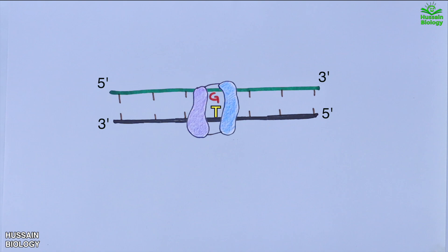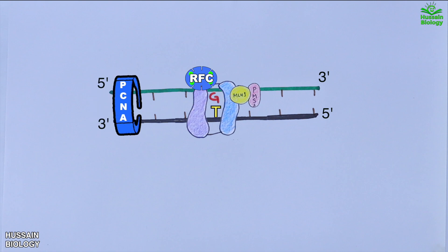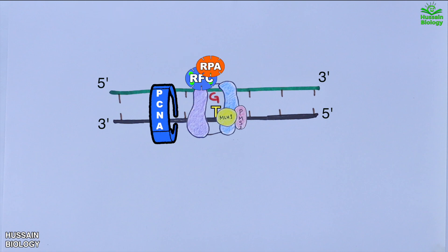Once the mismatch is detected, MSH proteins drive the recruitment of MLH1 and PMS2 toward the mismatch site. RFC in turn recruits PCNA, as shown in the animation. After that, PCNA drives the activation of the PMS2 subunit of MutLα, which acts as an endonuclease. At this time RPA also binds the site.